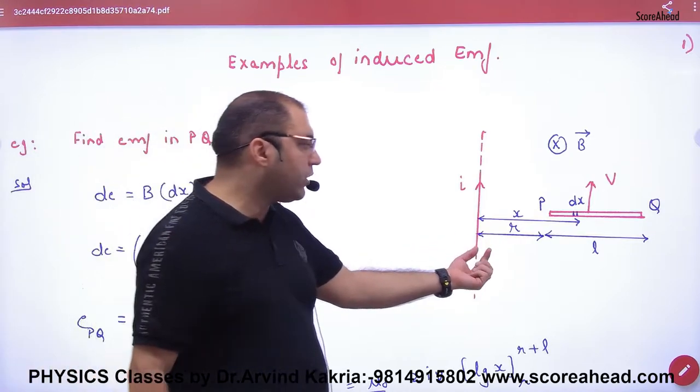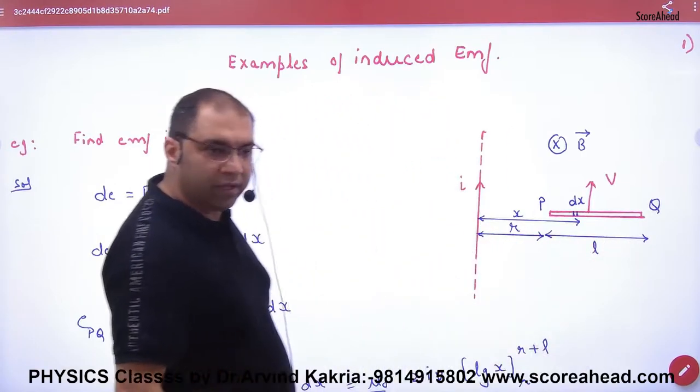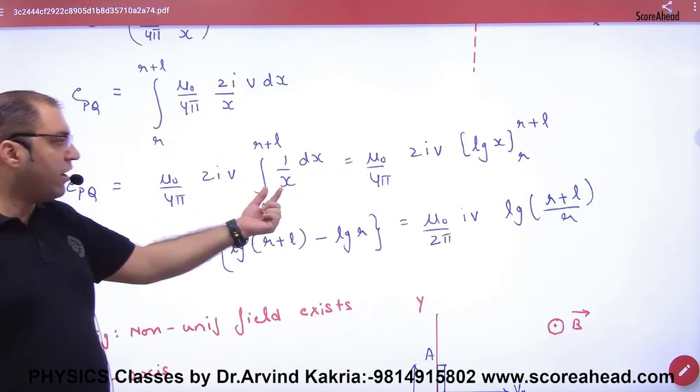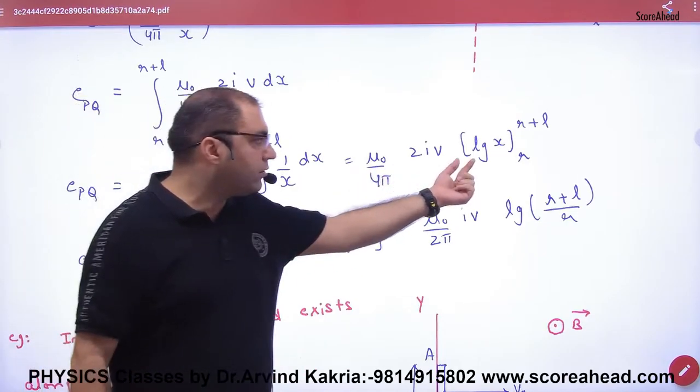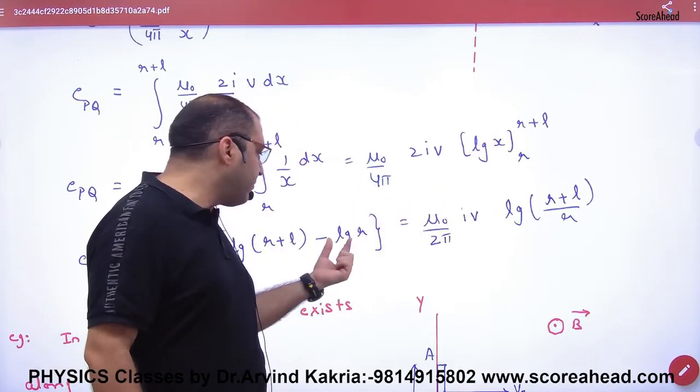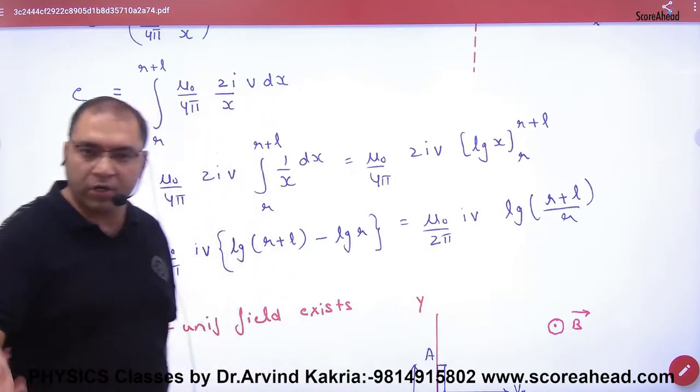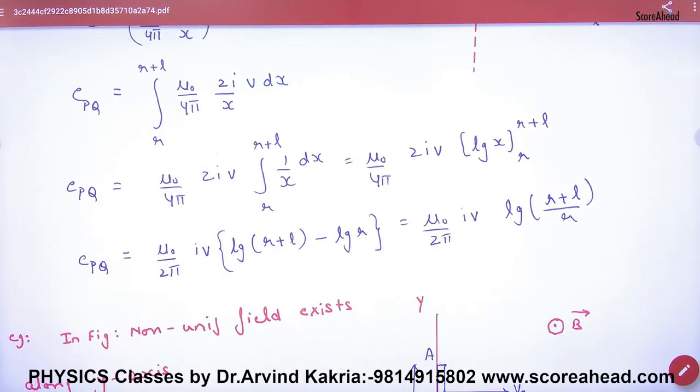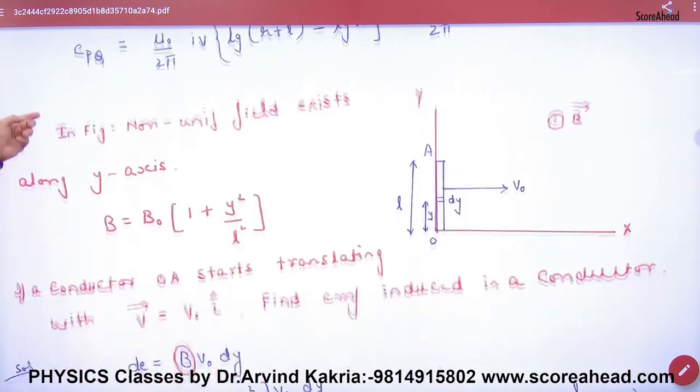So what will we put? R to R plus L. So integration 1 by x, log x, upper limit, lower limit. 2π minus log of first term upon second term is the answer. What point is clear here? So this is the answer, next question.